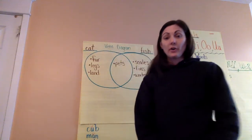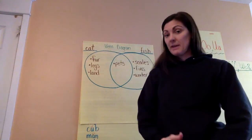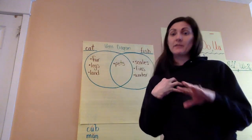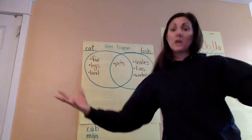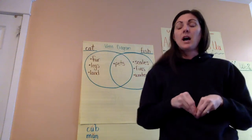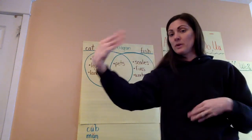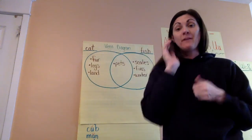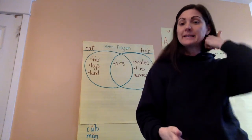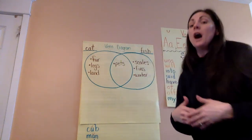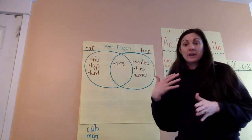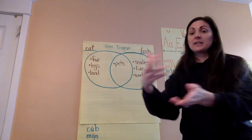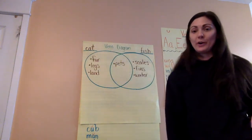I like to follow the gradual release method where it's I do the activity or the skill or strategy, then we do it together as a class. Sometimes we also do it in partners or groups. And then finally you do it independently. It's just a way of giving the children guidance and support in the strategy and skill until gradually they are doing it on their own.